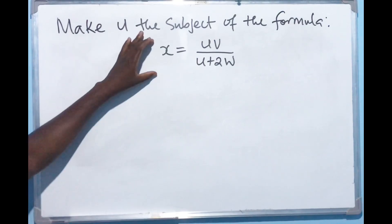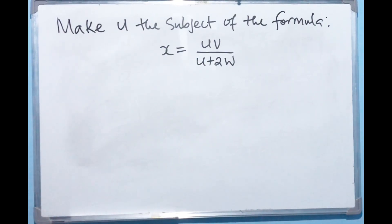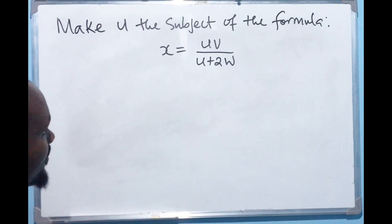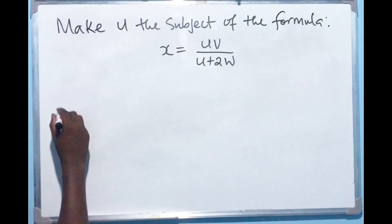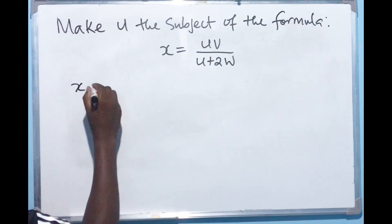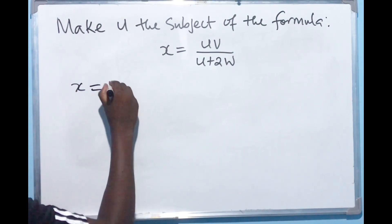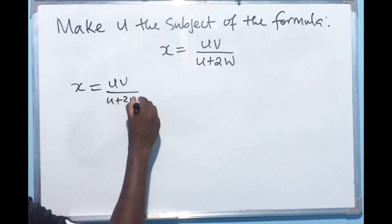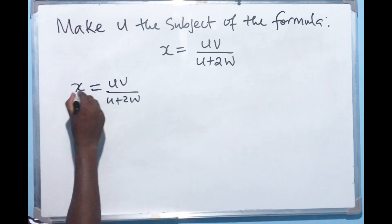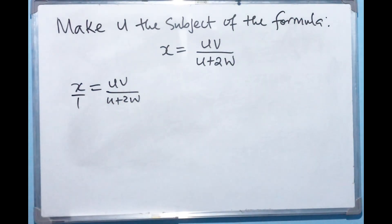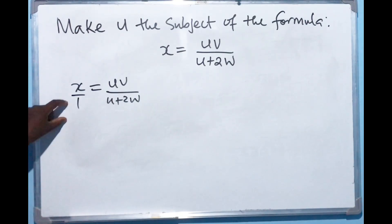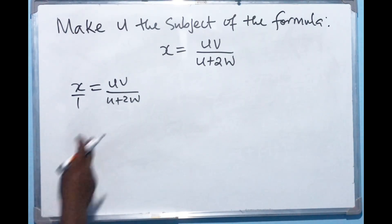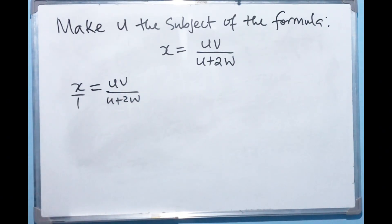What we have here is x, and x is the subject currently. So how do we go about making u the subject? What we can do here — the easiest way — is to start from x equals uv over u plus 2w. Write x with a denominator of 1 so that you can make this side also a fraction.